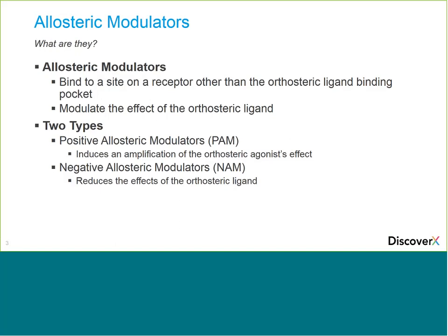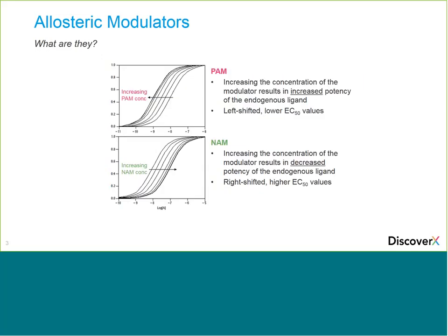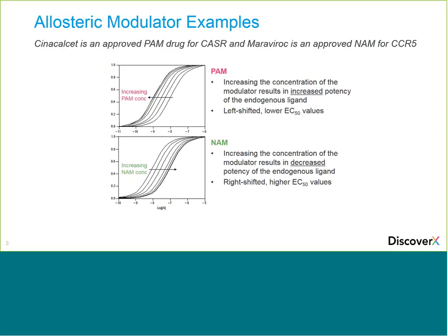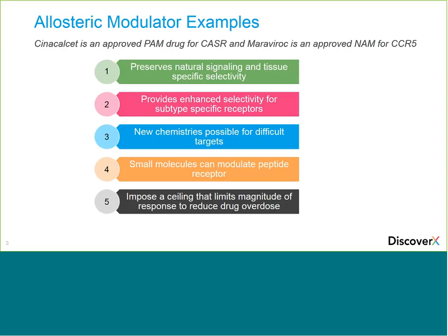When you have a PAM in your program, you will see an amplification of the orthosteric agonist effect. If you have a NAM, you will see attenuation of the effects of the orthosteric ligand, as shown in this graph here. If you run a dose-response curve in the presence of increasing amounts of the modulator, a PAM will produce a leftward shift in the dose-response curve and a lowered EC50 or enhanced potency. On the bottom graph, you see a NAM — running the dose-response curve in the presence of increasing amounts of NAM shows a rightward shift, or higher EC50.